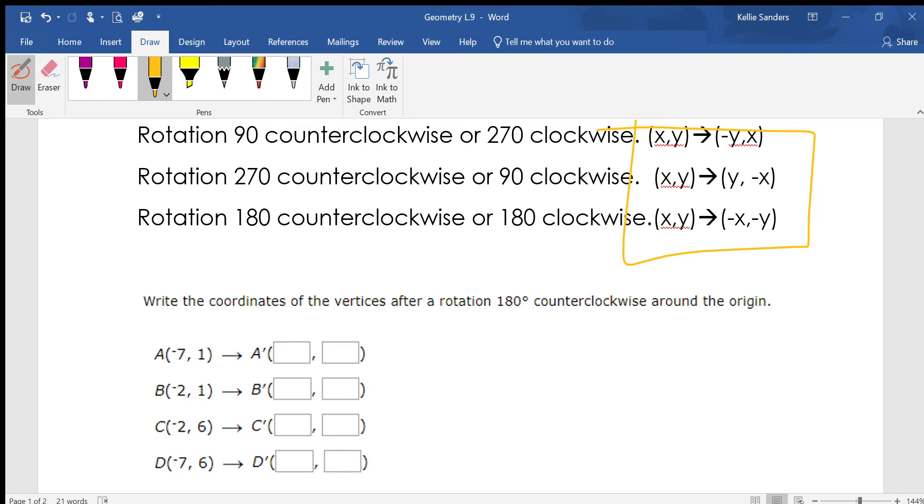You're just going to get to go with it. So 180 degrees counterclockwise: negative x, negative y. So positive 7, positive 2, positive 2, positive 7, negative 1, negative 1, negative 6, negative 6. That's it, that's all.